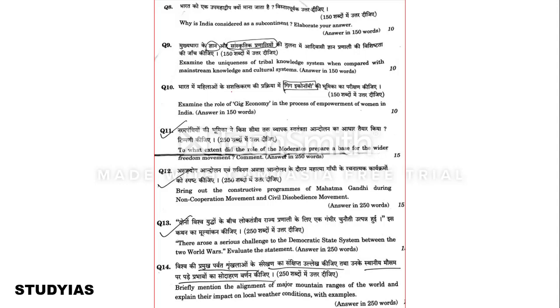The last question: How does Indian society maintain continuity in traditional social values? Enumerate the changes taking place in it. Overall, looking at the paper, quite a few questions were predictable because they were in current affairs — like cryptocurrency, gig economy — it was known that yes, these could be asked. The paper was moderate, not very difficult.